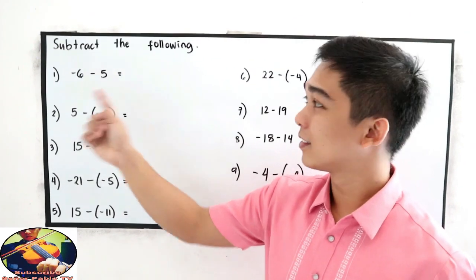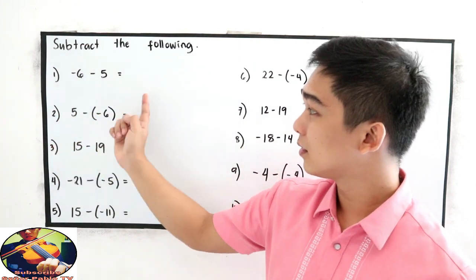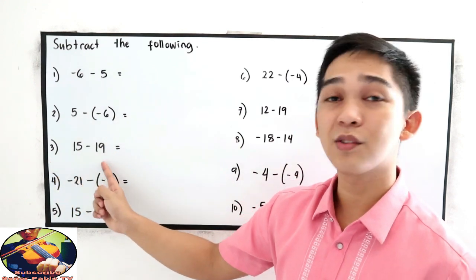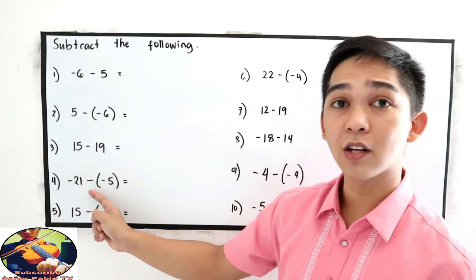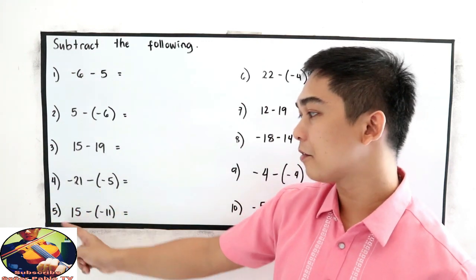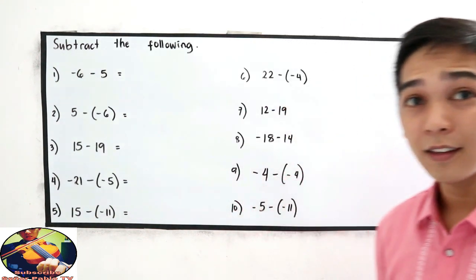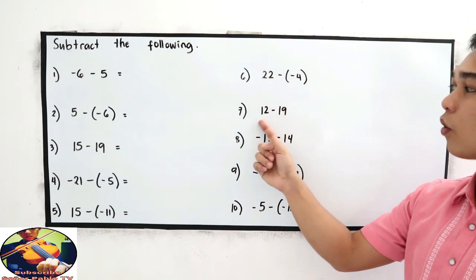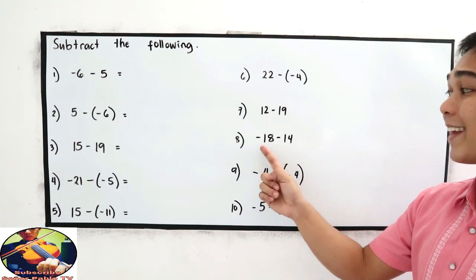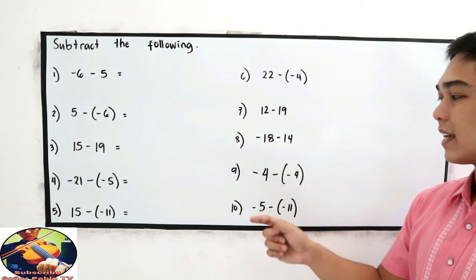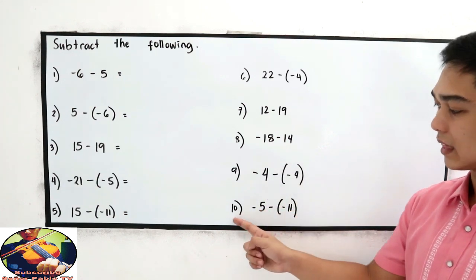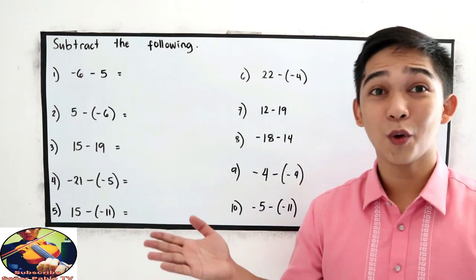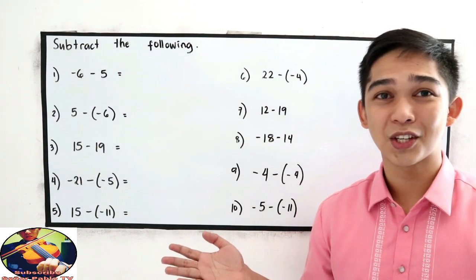Now subtract the following: Number 1 — negative 6 minus 5. Number 2 — 5 minus negative 6. Number 3 — 15 minus 19. Number 4 — negative 21 minus negative 5. Number 5 — 15 minus negative 11. Number 6 — 22 minus negative 4. Number 7 — 12 minus 19. Number 8 — negative 18 minus 14. Number 9 — negative 4 minus negative 4. And number 10 — negative 5 minus negative 11. If you want to try, you can pause the video, then resume watching when you are done.